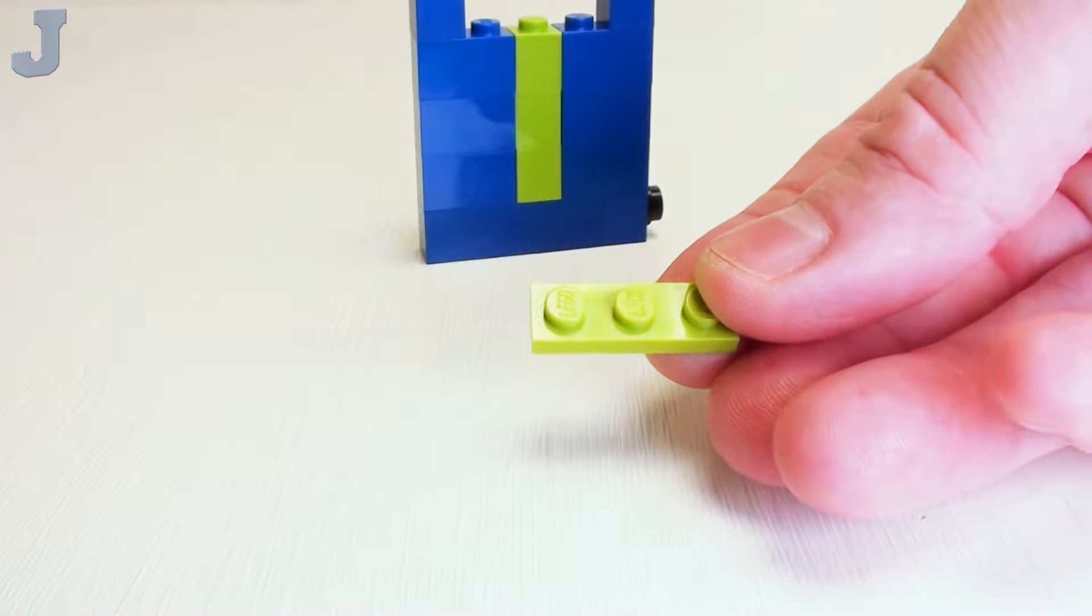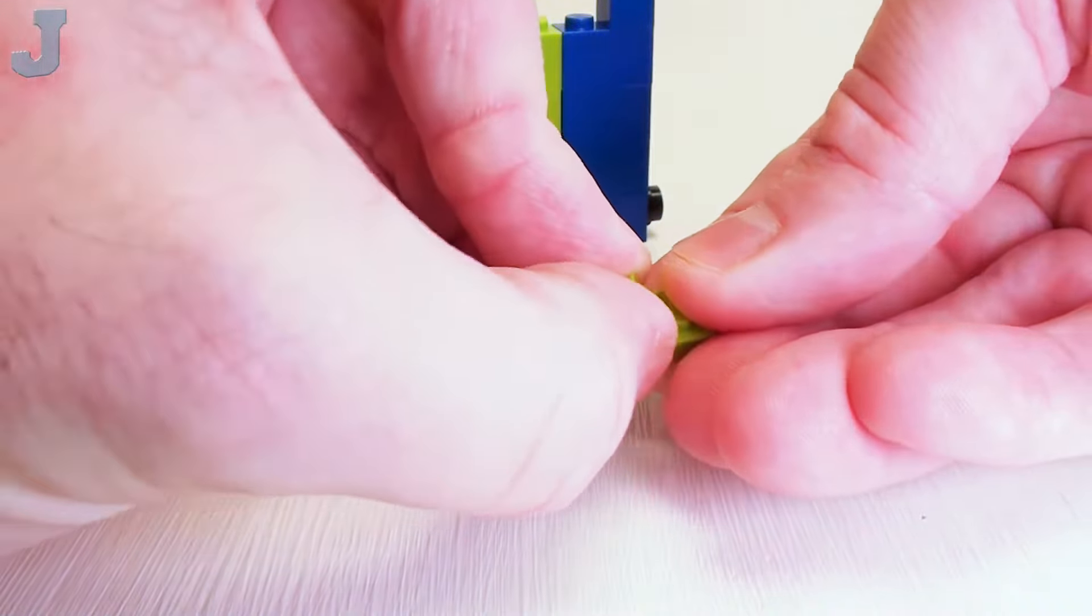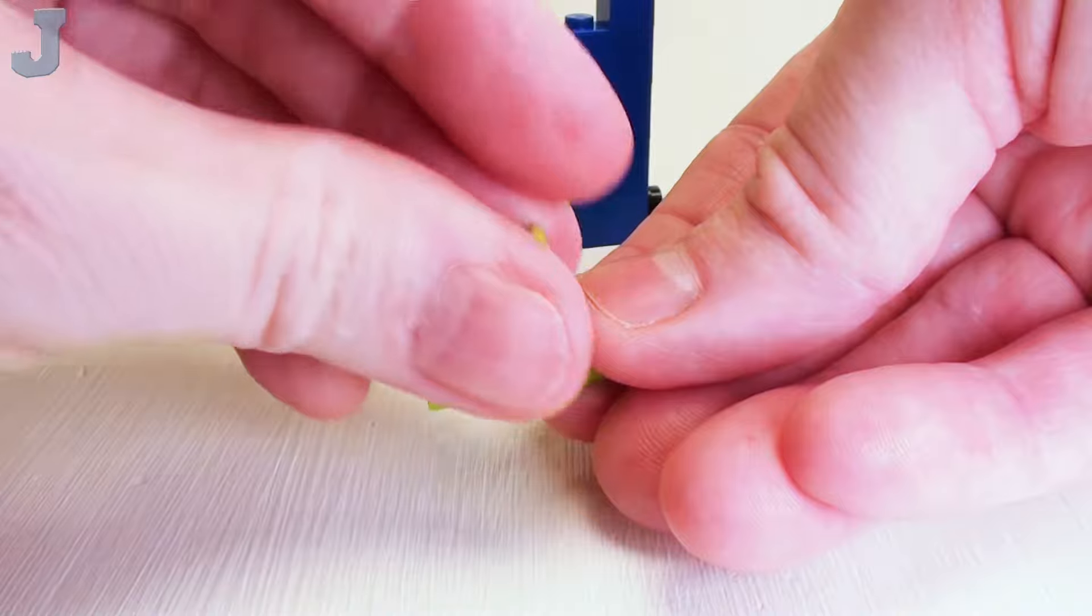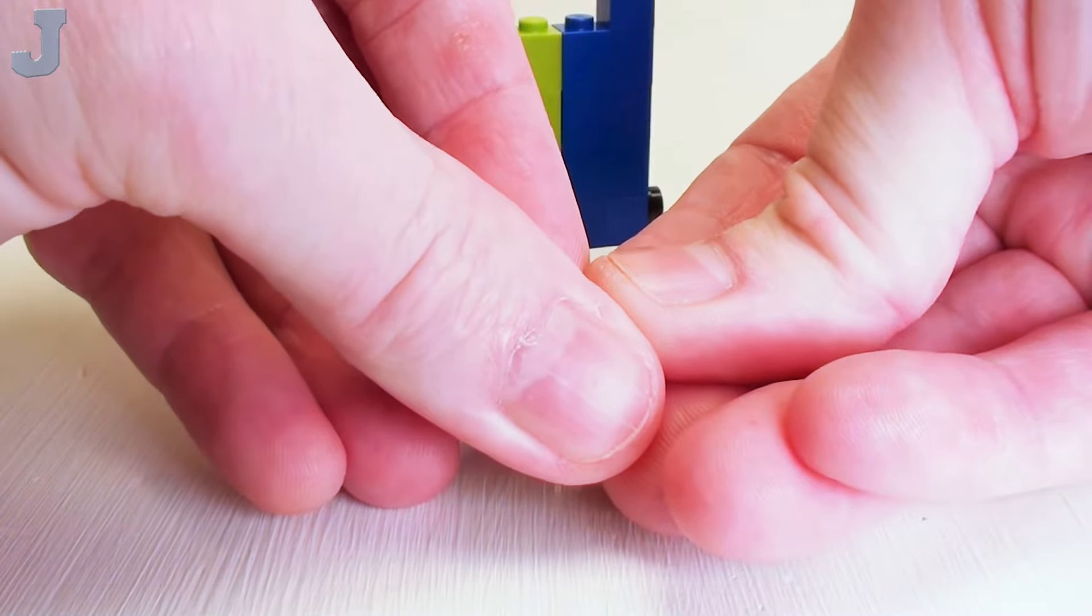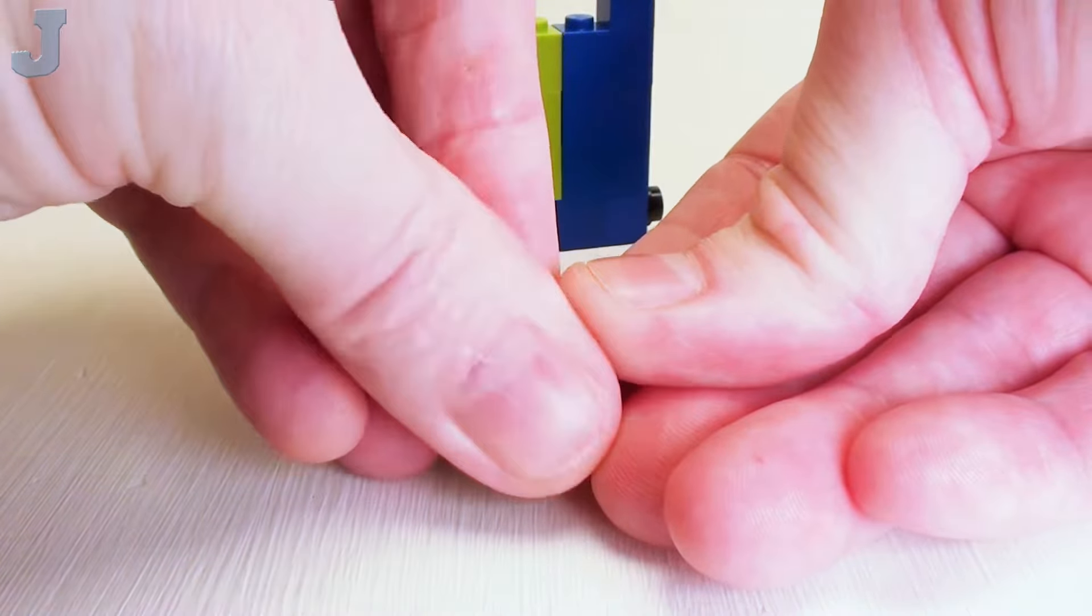Take a 1 by 3 plate. I'm going to place a 1 by 1 plate right in the center and a 1 by 1 flat tile. This is going to be the front portion of our arrow.